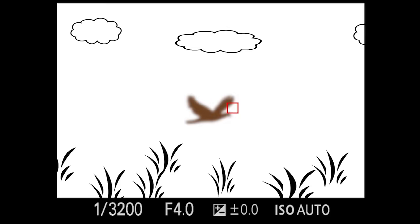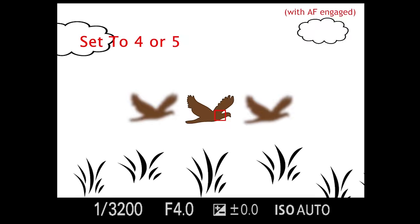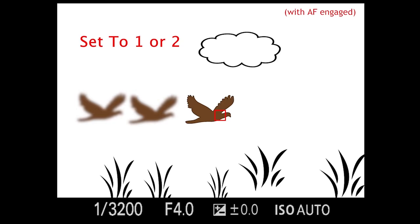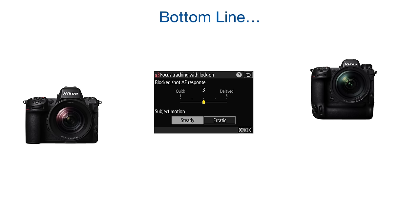Shorter delays have advantages too. If the camera hits the background instead of the bird, with a short delay the camera will quickly jump back to the bird. With a longer delay it can feel like forever before the camera changes from the background to the bird. Additionally, shorter delays allow you to jump from target to target faster — if you're jumping from bird to bird with AF engaged, a shorter delay lets you pick up the new target much faster.